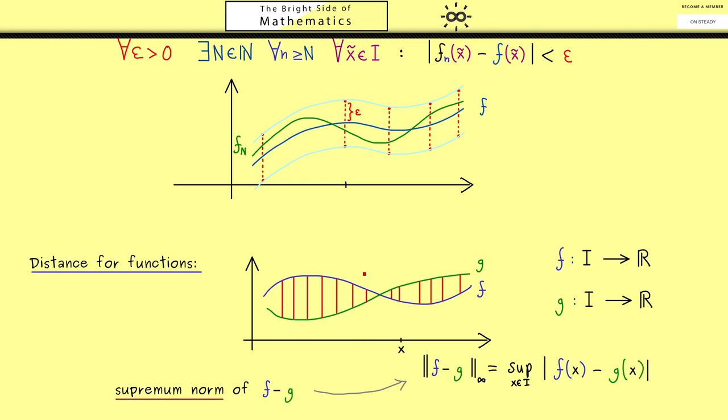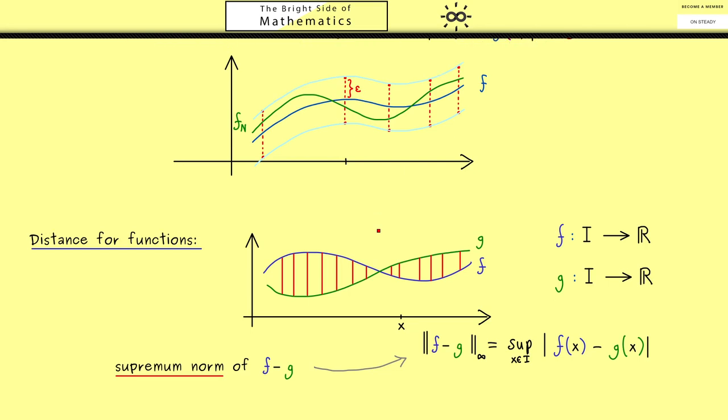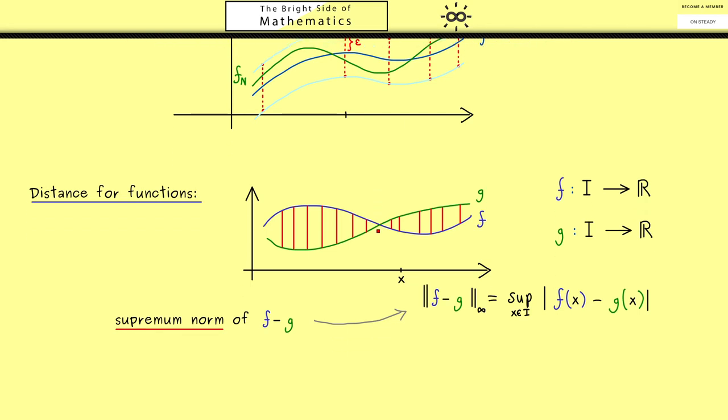Now, as promised, with this we can rewrite the uniform convergence definition. It simply means that the supremum norm gives us a sequence that goes to zero. So ||f_n - f||_∞ goes to zero when n goes to infinity. So we started with a sequence of functions, but what we got here is an ordinary sequence of numbers. Therefore, this is also the ordinary convergence for a sequence of real numbers.